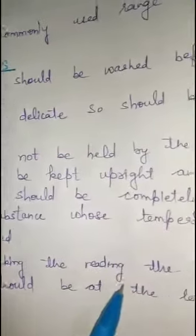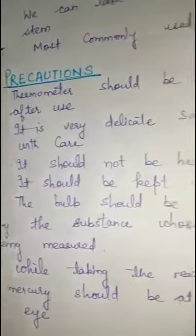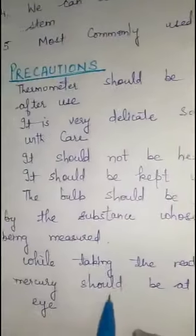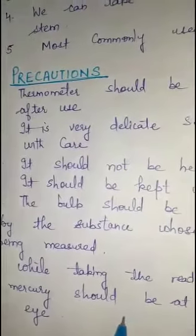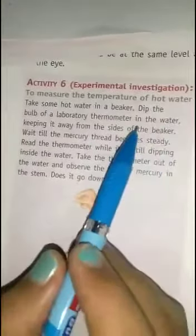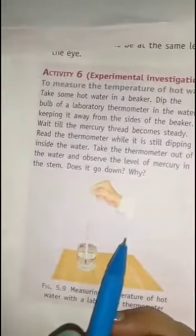While taking the reading, the level of mercury should be at the level of the eye. Now we will do one activity: to measure the temperature of hot water. Take some hot water in a beaker and dip the bulb of the laboratory thermometer in the hot water, keeping it away from the sides of the beaker.